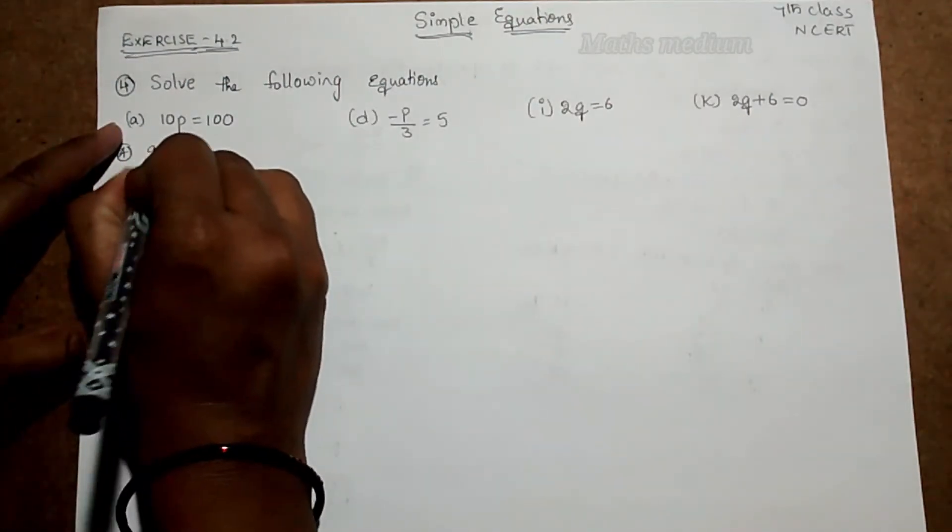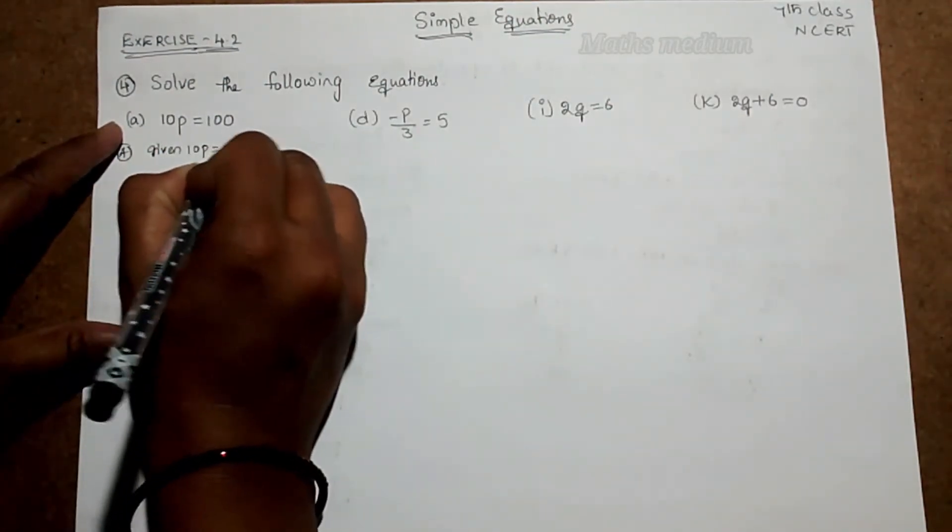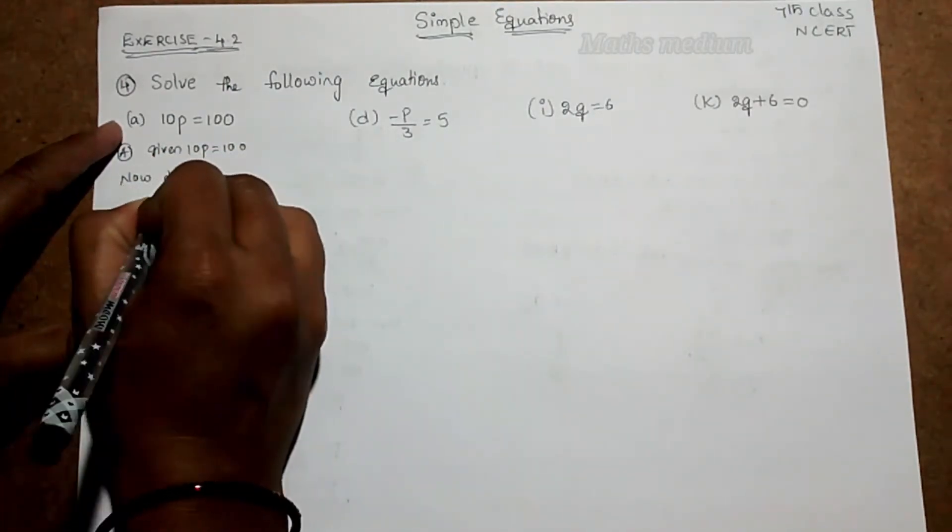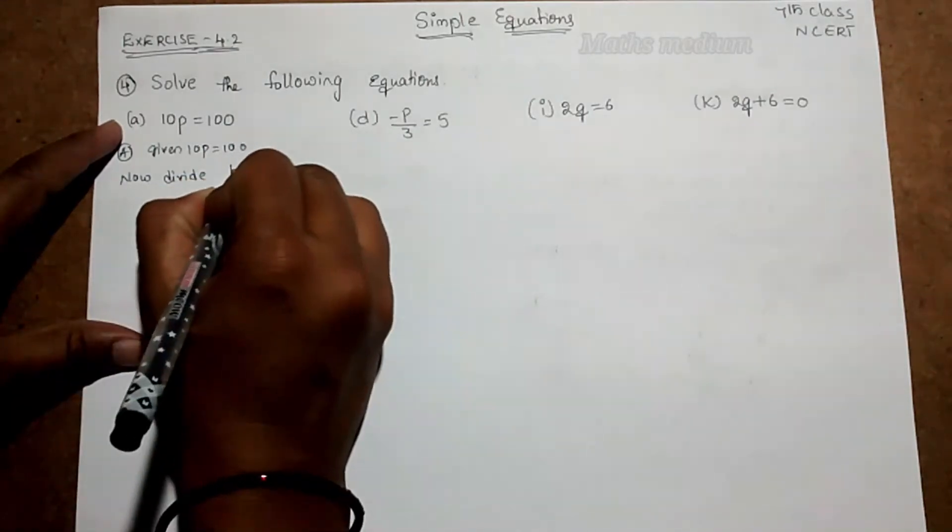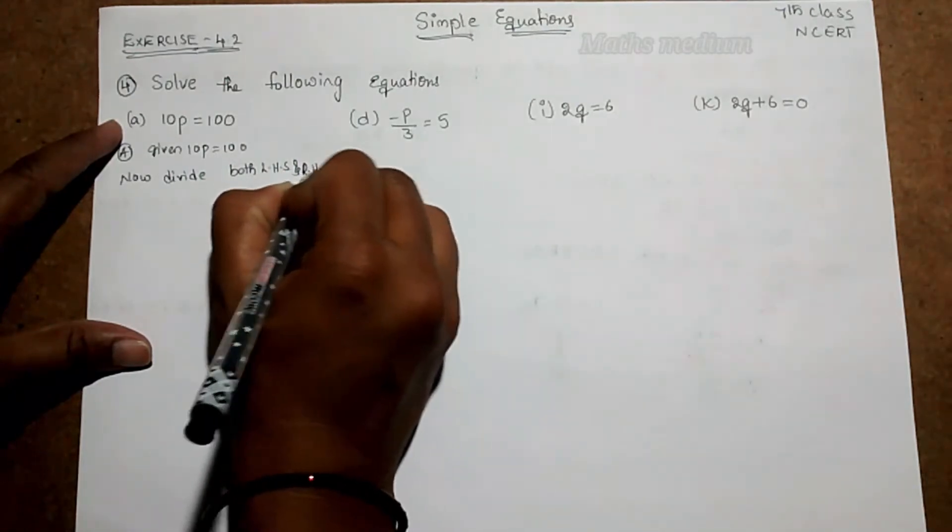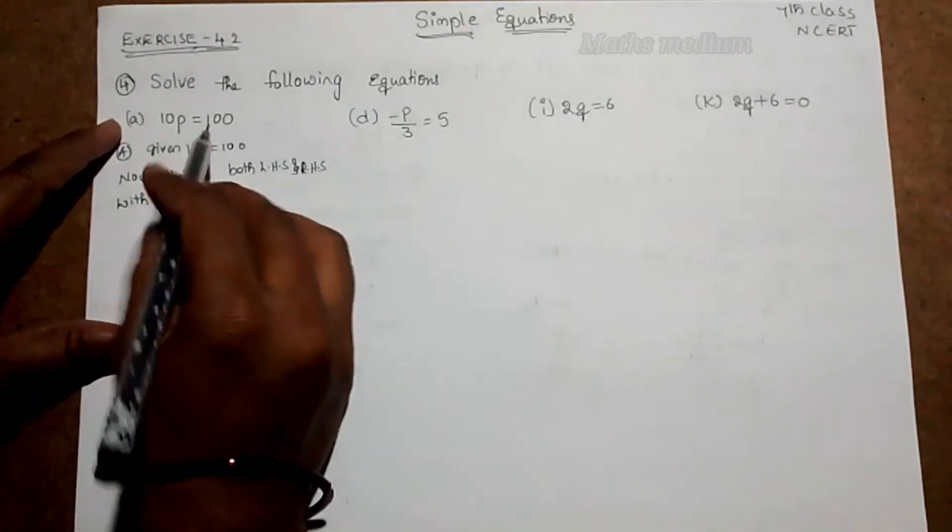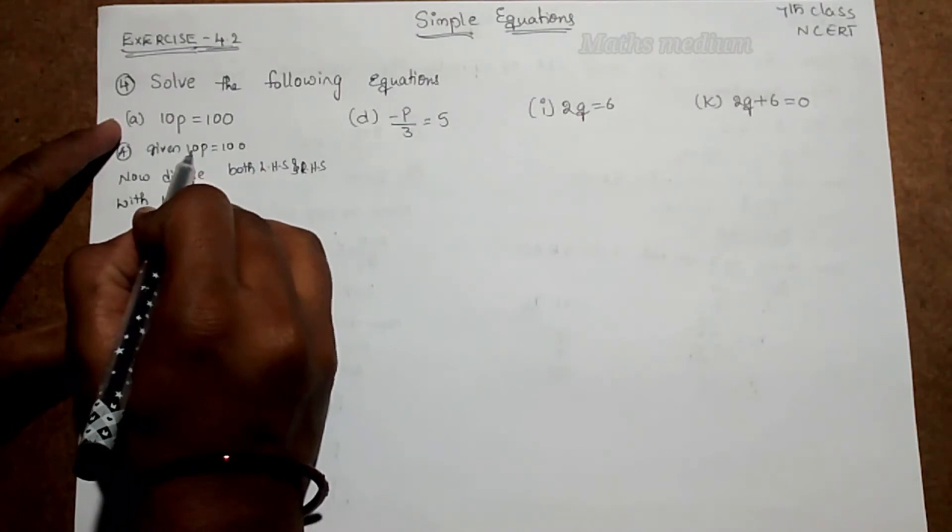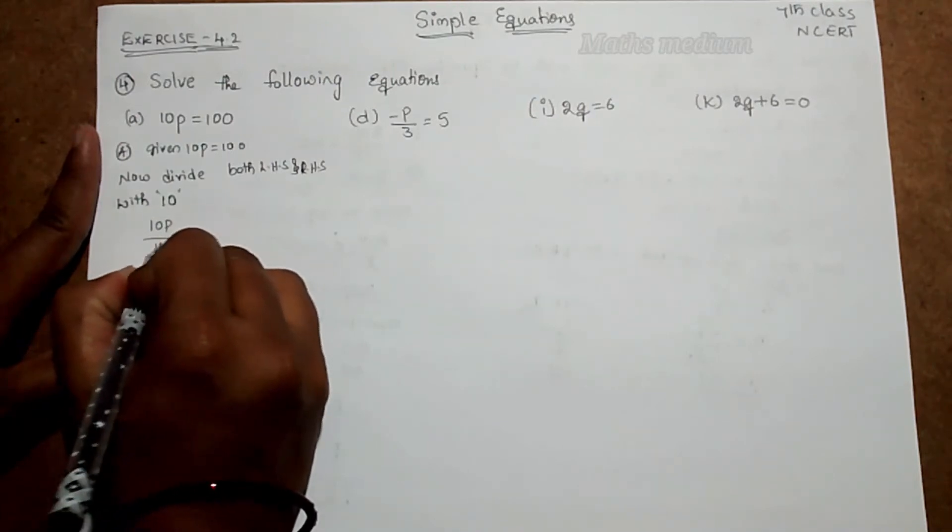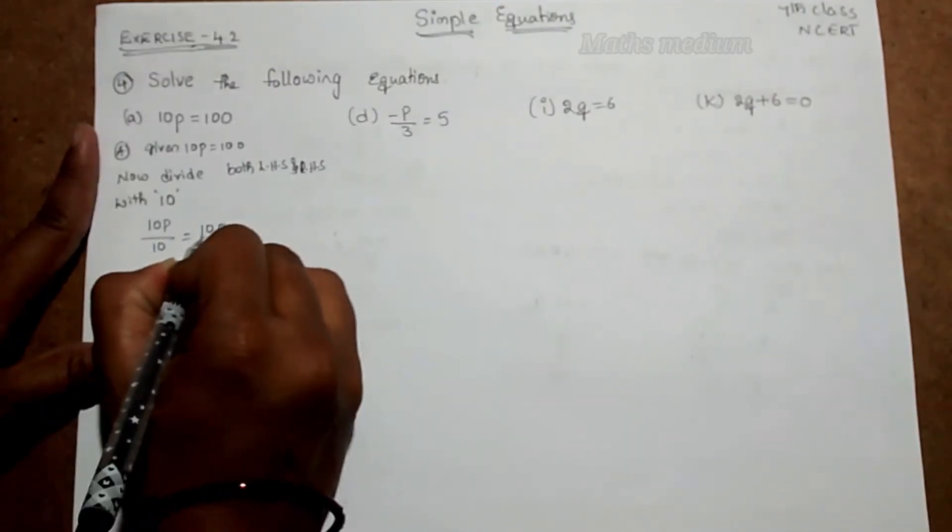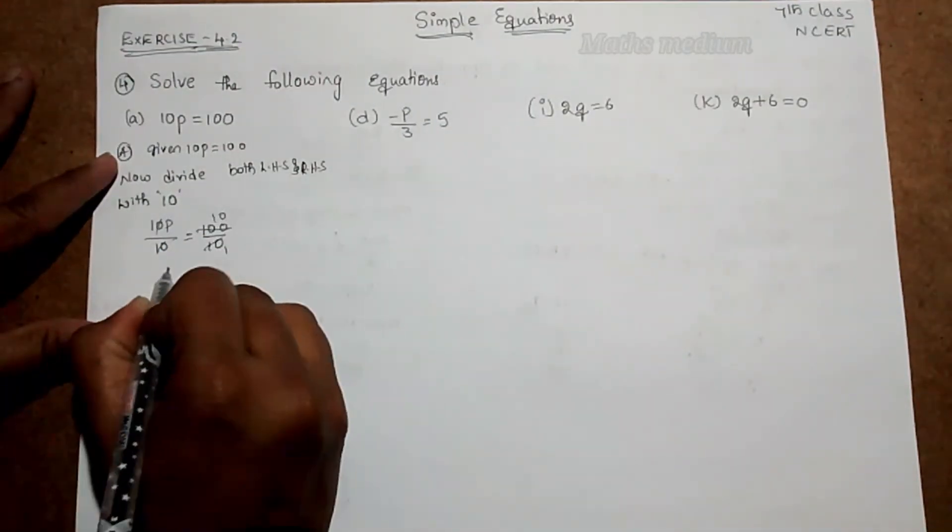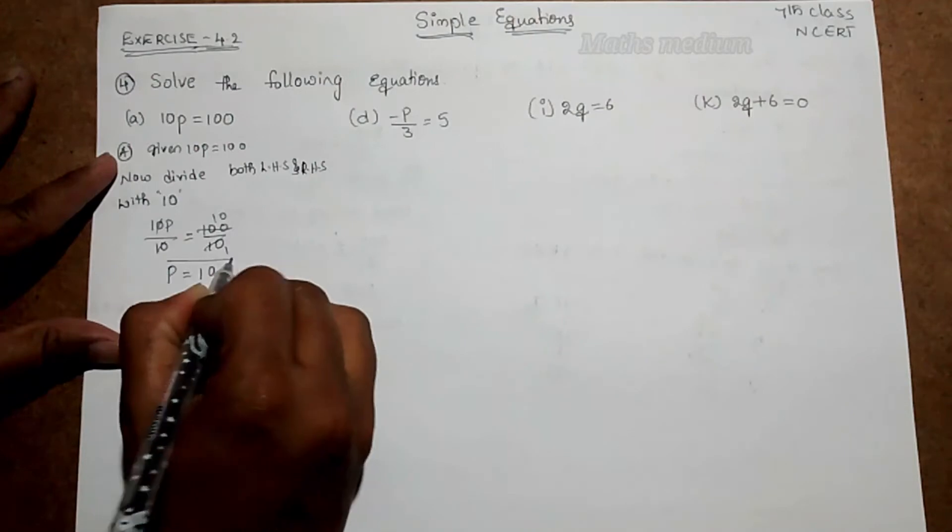Given 10p is equal to 100. Now divide both LHS and RHS with 10, because here we're multiplying a variable with 10. So now take 10p by 10 is equal to 100 by 10. 10 and 10 cancel. Here 10 ones are 10 tens. So p is equal to 10. Here is the answer we get.